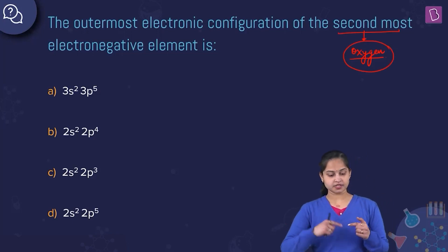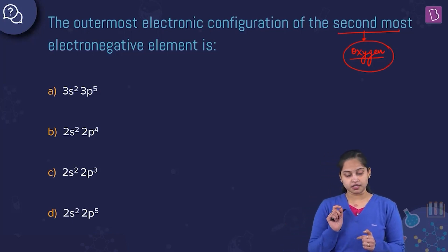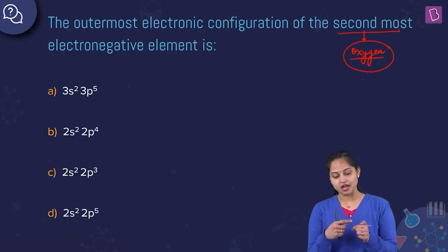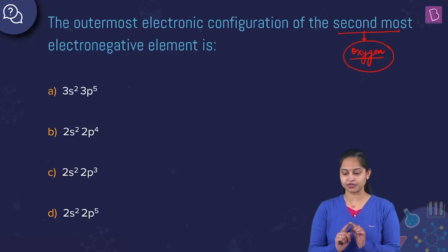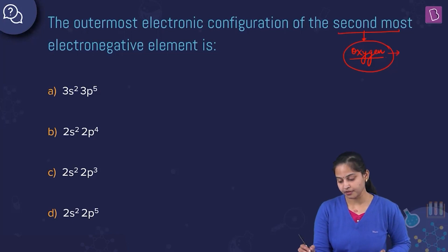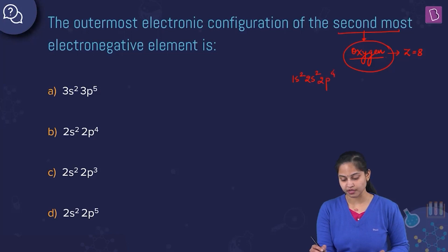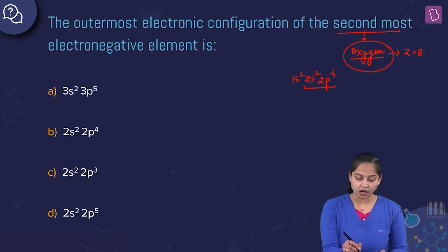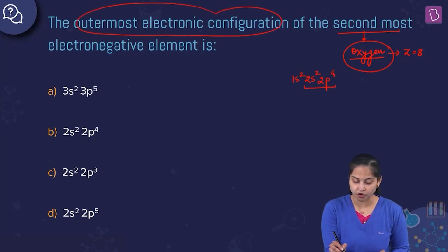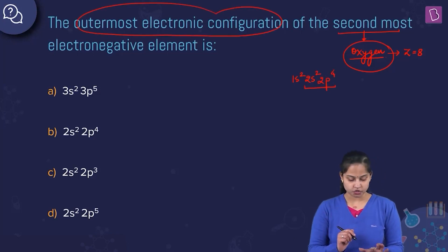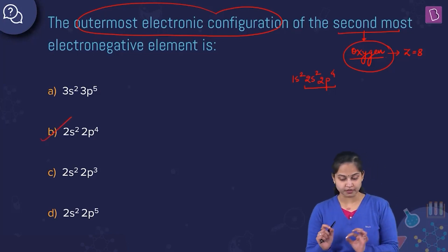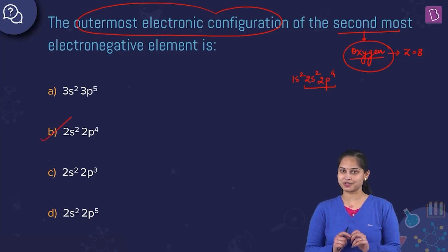Since oxygen is the second most electronegative element, its outermost electronic configuration: atomic number Z of oxygen equals 8, and its full electronic configuration is 1s2, 2s2, 2p4. The outermost electronic configuration is 2s2 2p4, so option B is the right answer.